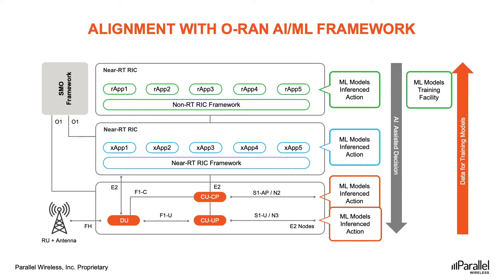An ML model is a knowledge base — it only knows how to solve a problem through training with data. Once it's trained, it creates a model to do the inferencing, forecasting, etc. The goal is to use these predictions for network planning, for power savings, and other network actions that will bring benefits to the mobile operator in self-optimizing the network.